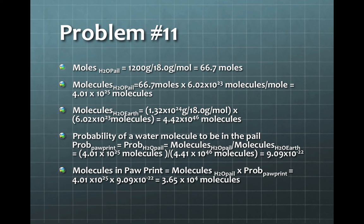Now we multiply this probability with the total number of molecules in the pail to get the number of molecules in that pail of water that were originally in the paw print. By getting that product, we get the result of 3.65 times 10 to the 4 molecules.